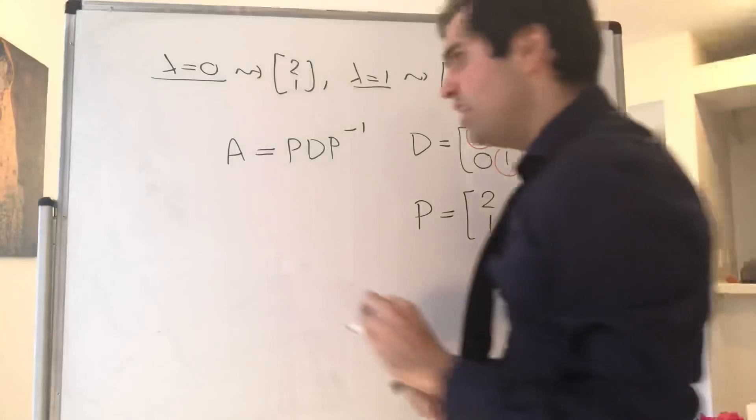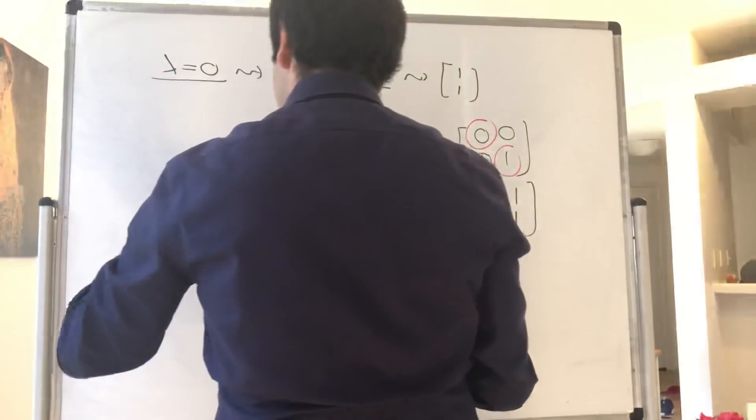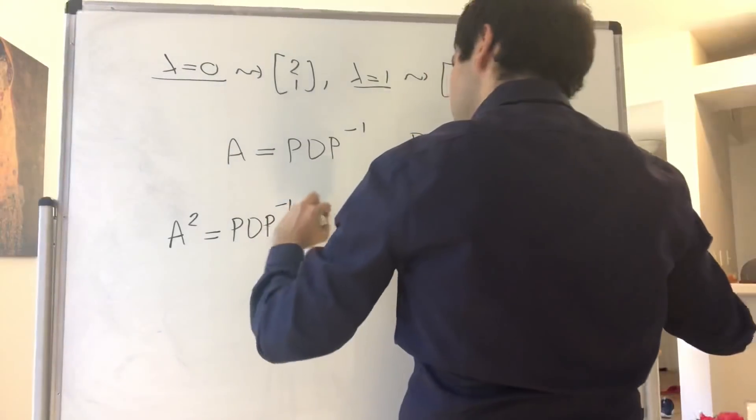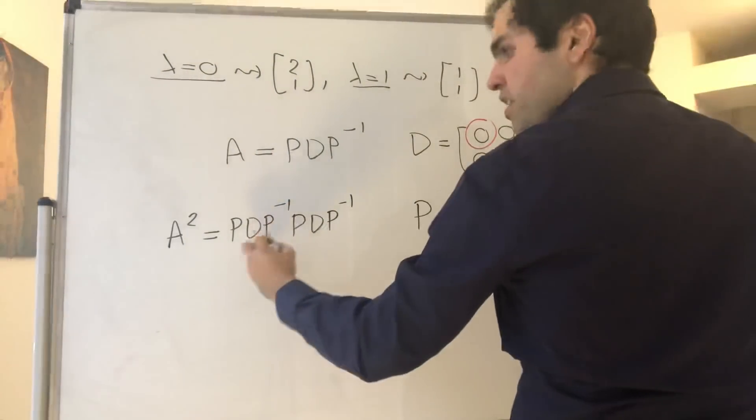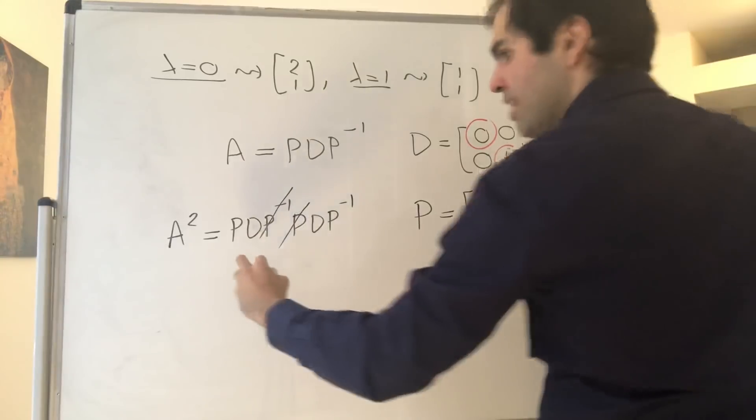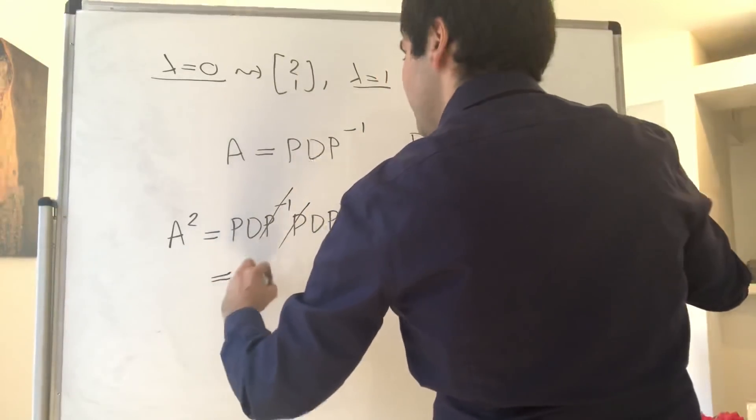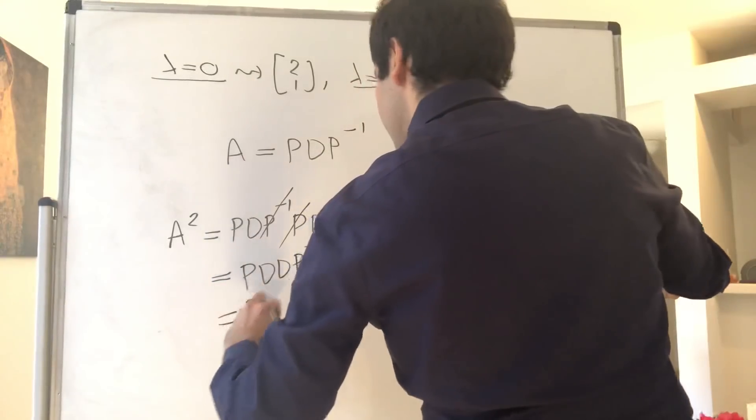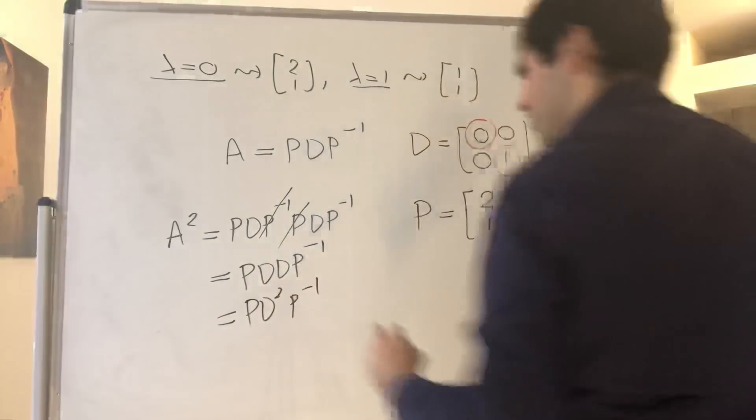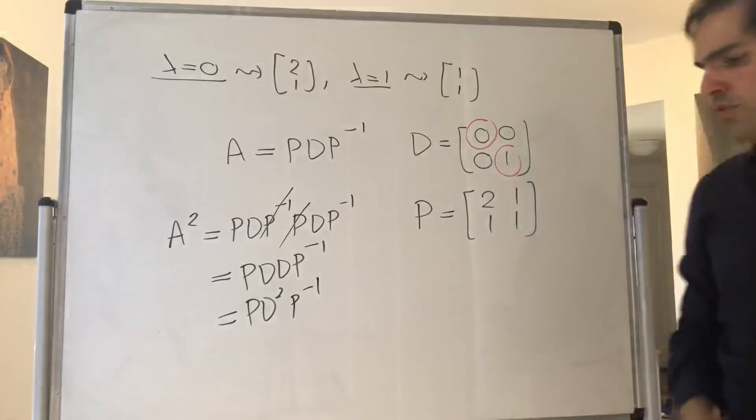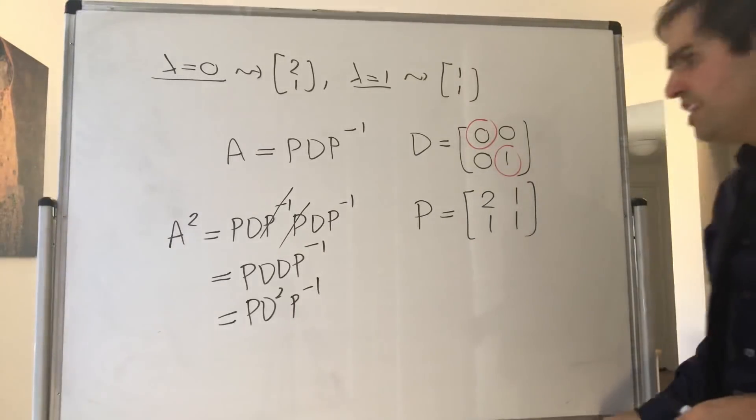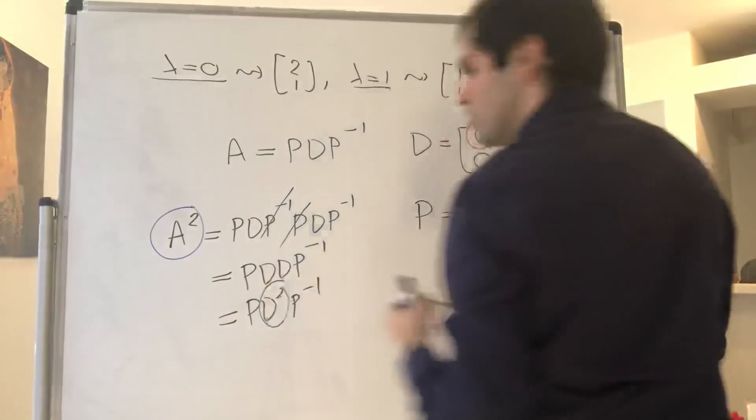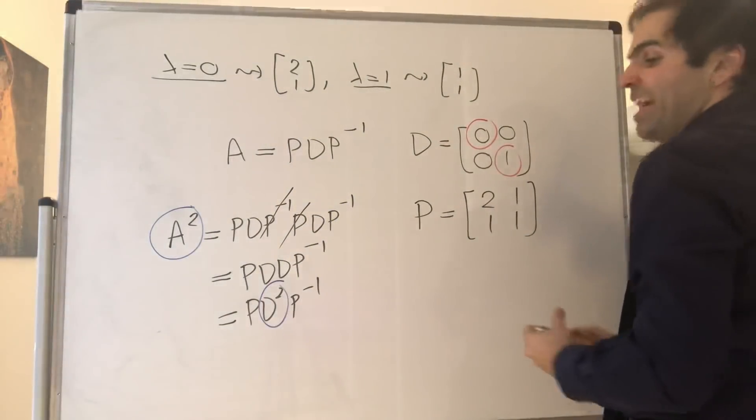Namely, if A is PDP inverse, then A squared is PDP inverse, PDP inverse. And notice the P inverse and P cancels out, and you get PD times DP inverse, so PD squared P inverse. And in general, so notice A squared is PD squared P inverse, and then A to the N just becomes PD to the N P inverse.